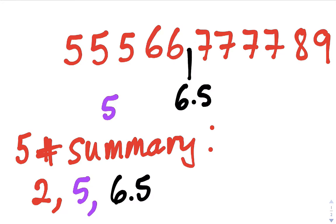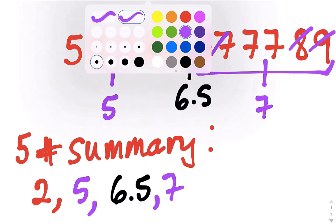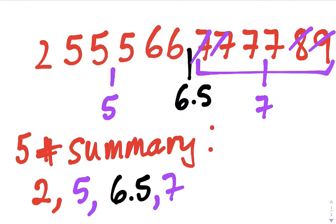Let's find Q3. Q3 is the same as finding Q1 except it's the second half of data. Look at everything above the median, don't include the median. You cross off until you find the middle — again it's between two numbers. The middle of seven and seven is seven. So Q3 is seven, and we can see that the maximum is nine.